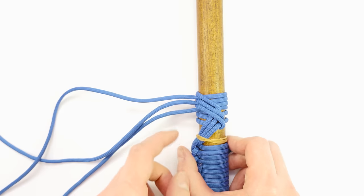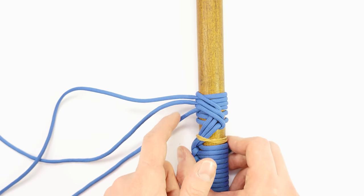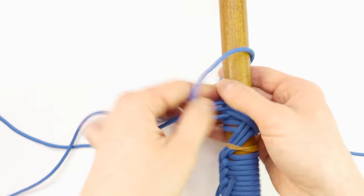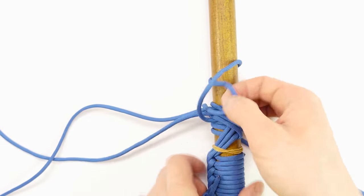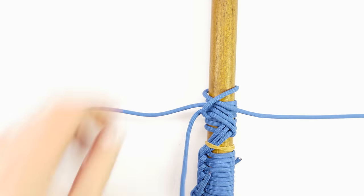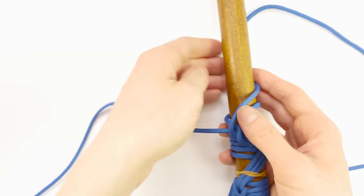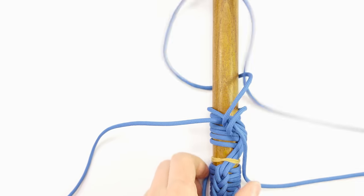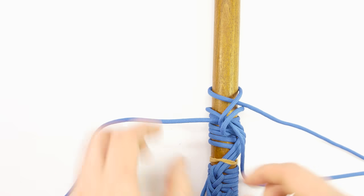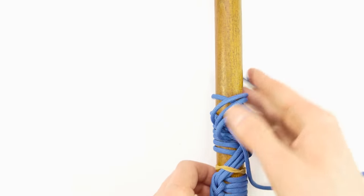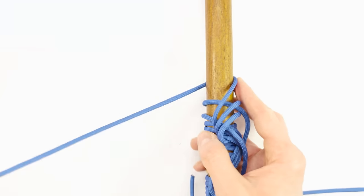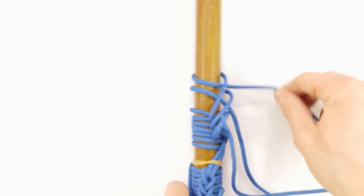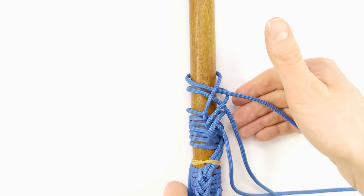Then reverse direction again, starting with the bottom cord on the left, and make a hitch towards the right side. The next one, and finally the third one. Like this. Then tighten it up.